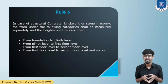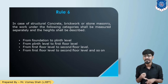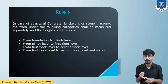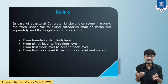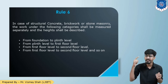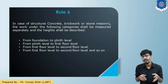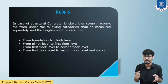Rule number 6: In the case of structural concrete, brickwork, or stone masonry, work at different height categories shall be measured separately with heights mentioned — from foundation level to plinth level, plinth level to first floor, first floor to second floor, and so on. This is important when constructing a multi-storey building such as G+10. You cannot mention the entire quantity in a single line; you must mention it floor by floor, because with increasing floors the rates and measurements will differ.